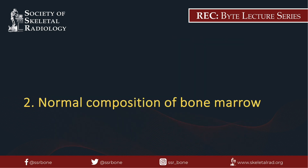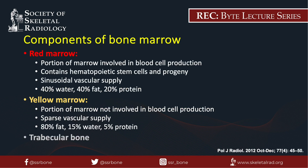Next, let's discuss the normal composition of bone marrow. Red marrow is the portion of marrow that is actively involved in hematopoiesis. It contains hematopoietic stem cells and progeny with a rich sinusoidal vascular supply, and comprises approximately 40% water, 40% fat, and 20% protein. Yellow marrow is the portion of marrow not actively involved in hematopoiesis, has sparse vascular supply, and comprises approximately 80% fat, 15% water, and 5% protein.